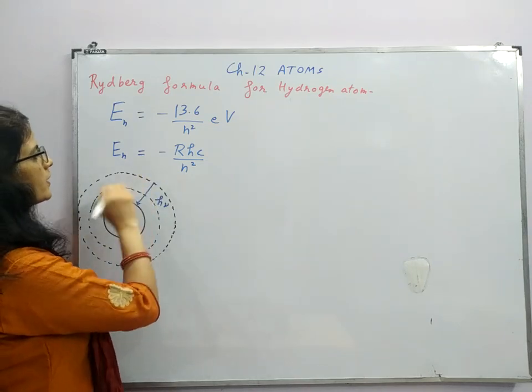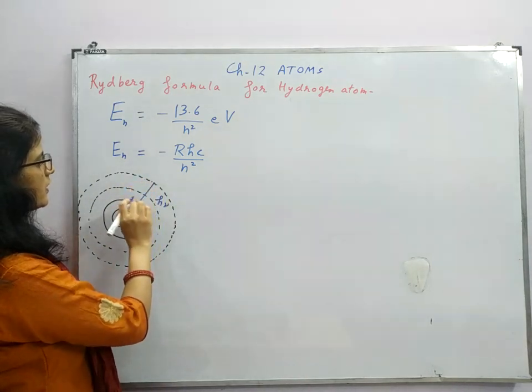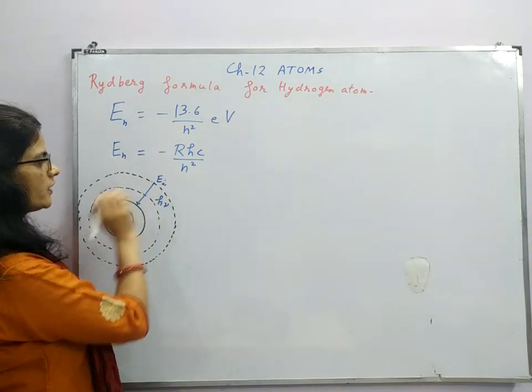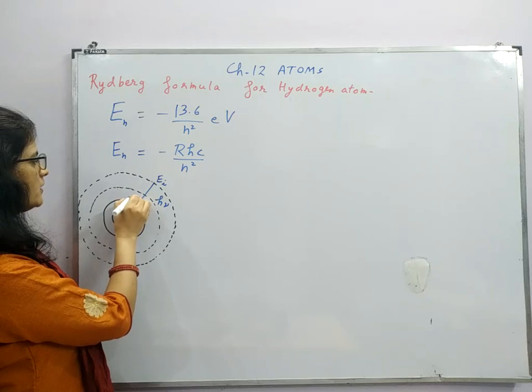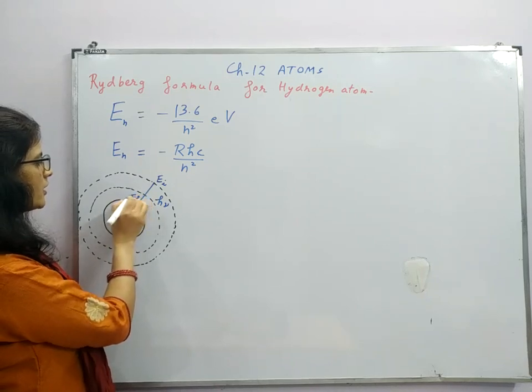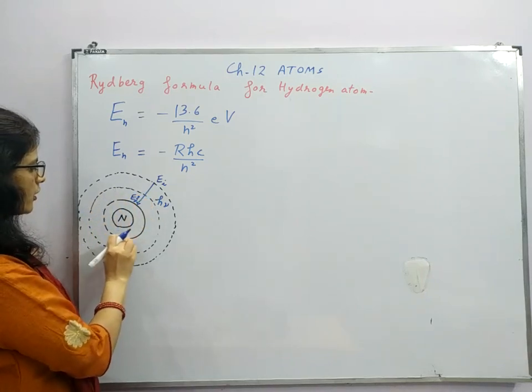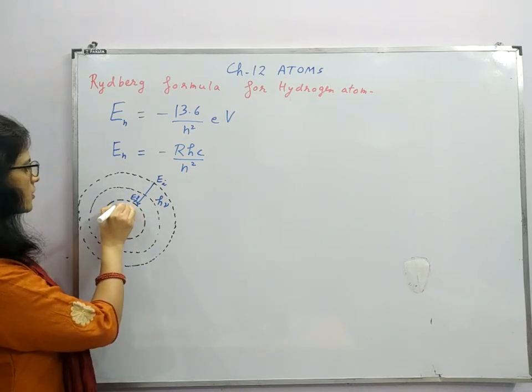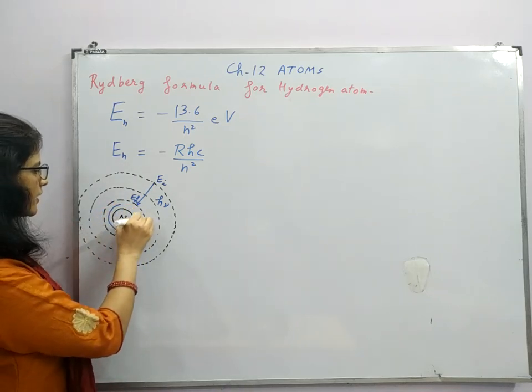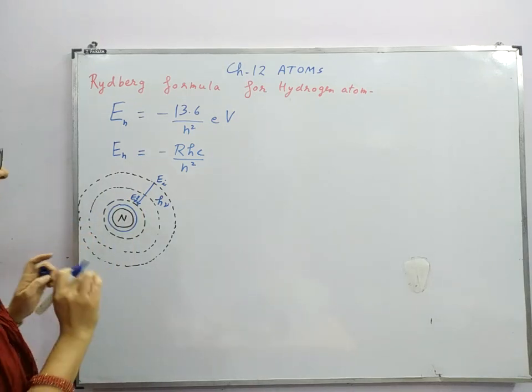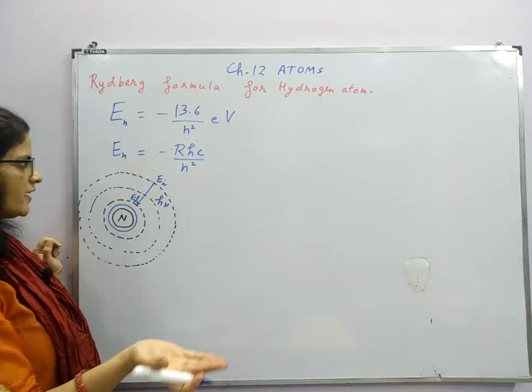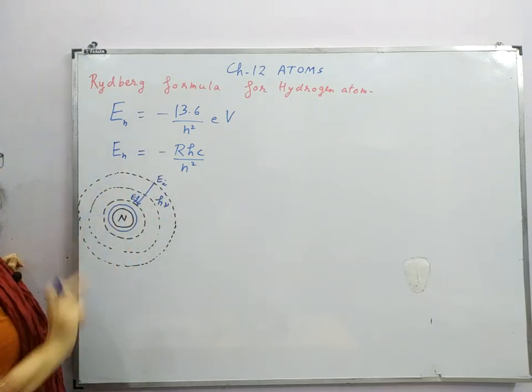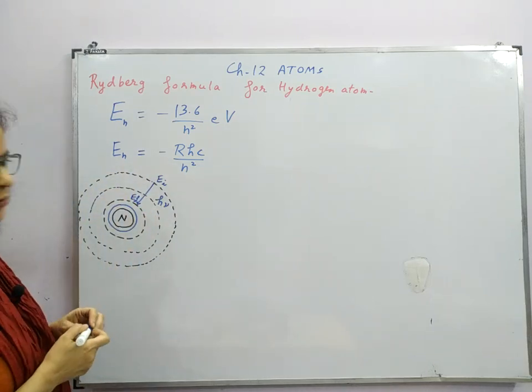So suppose we are taking some initial energy level from where it is jumping to some final energy level. I am drawing another ground state energy level here. Initially it was in some higher energy state, then it jumps to the lower energy state. In that case, energy is released in the form of photon.